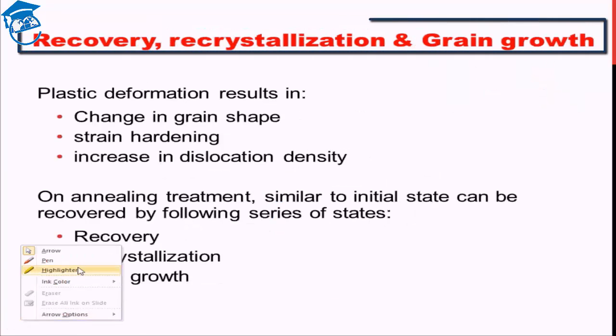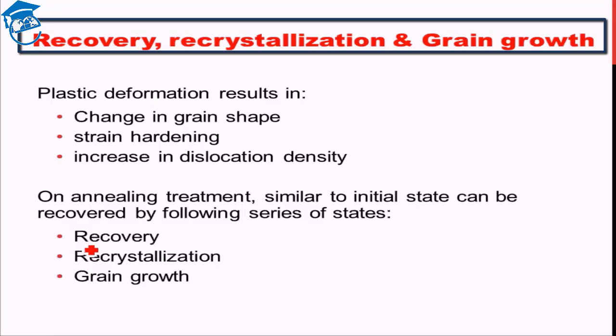Now let us discuss recovery, recrystallization, and grain growth. Strain hardening leads to increased strength but compromises ductility. By continuous strain hardening, the ductility may be reduced to an unusable range. There has to be some method to improve ductility by compromising a little on yield strength, such that the net result is that ductility improves significantly without losing too much strength. That is done by the process of recovery and recrystallization.